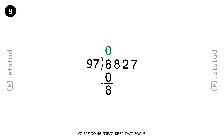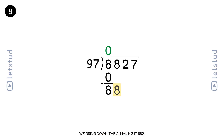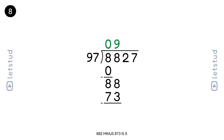You're doing great, keep that focus. Let's bring down the next digit, 2, making it 882. 97 fits into 882 nine times. 97 times 9 is 873. 882 minus 873 is 9.